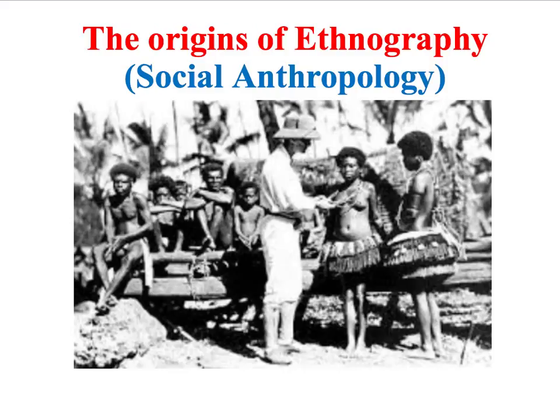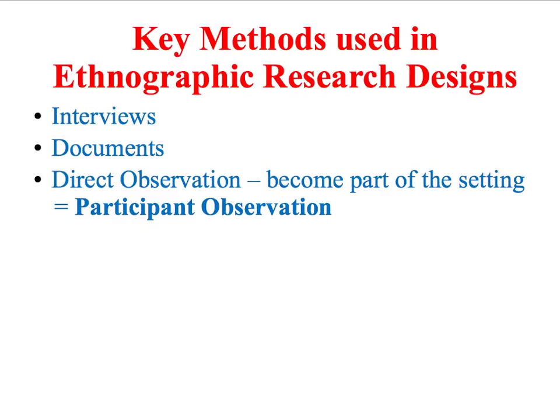The aim of ethnography is to try to understand the symbolic world of the people studied — in other words, to achieve Verstehen and to understand the meanings that people attach to their behavior and their culture. In order to produce an ethnographic study of a social group, you need to use qualitative research methods. Typically, ethnographic research designs will be based on things like unstructured interviews, personal documents if available, and particularly direct observation. Above all else, ethnography tends to be synonymous with participant observation.